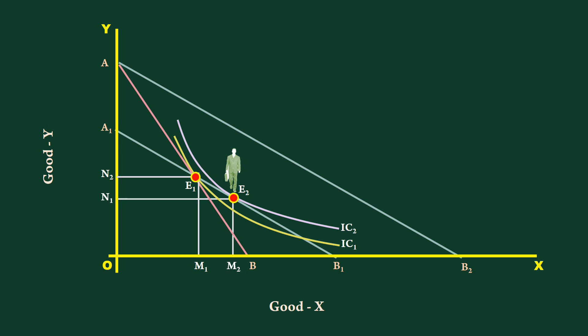According to Slutsky, it is substitution effect that makes a consumer always buy more after a fall in price. In other words, the negative slope of the demand curve or negative relation between price and quantity demanded is mainly due to substitution effect.